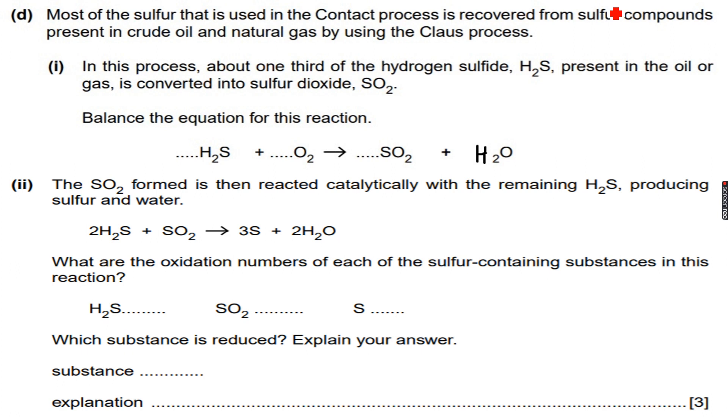In this process, which is the Claus process they are talking about, about one-third of the hydrogen sulfide, H2S, present in the oil or gas is converted into sulfur dioxide. Balance the equation for this reaction. So they have told us that H2S plus O2 gives us SO2 plus water. What we have to do is balance this equation.